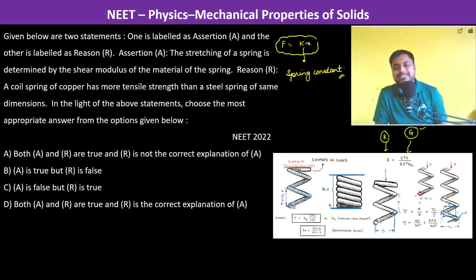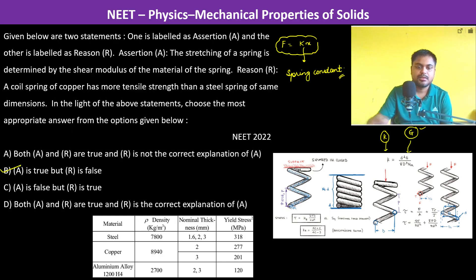Steel has actually more tensile strength than copper. Therefore the answer is going to be B. As it can be seen in the table, steel has a yield strength stress of 318, copper has 277 only. So therefore steel has more tensile strength than copper.